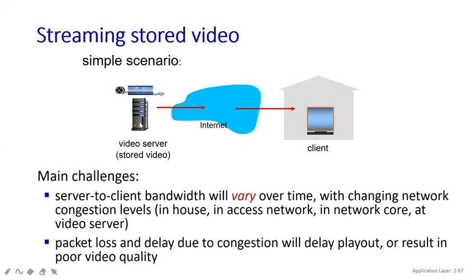Whenever the stored video comes from your server to any network, it will vary because of the uploading and downloading network situation of your access network. If we place one more server in between, then the video comes to that server first and from that network it can go to many clients. That is my access network — and at all these variety levels, network congestions will happen.